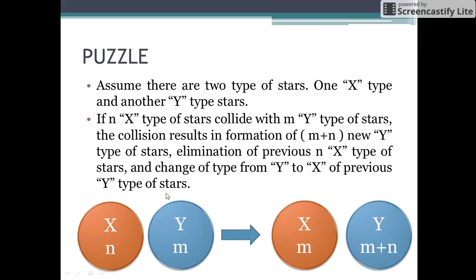To understand the theory more clearly, let us see this diagram. n x type of stars and m y type of stars collide to form m plus n new y type of stars. The m y type of stars are converted to m x type of stars, and the original n x type of stars present in the collision gets eliminated.